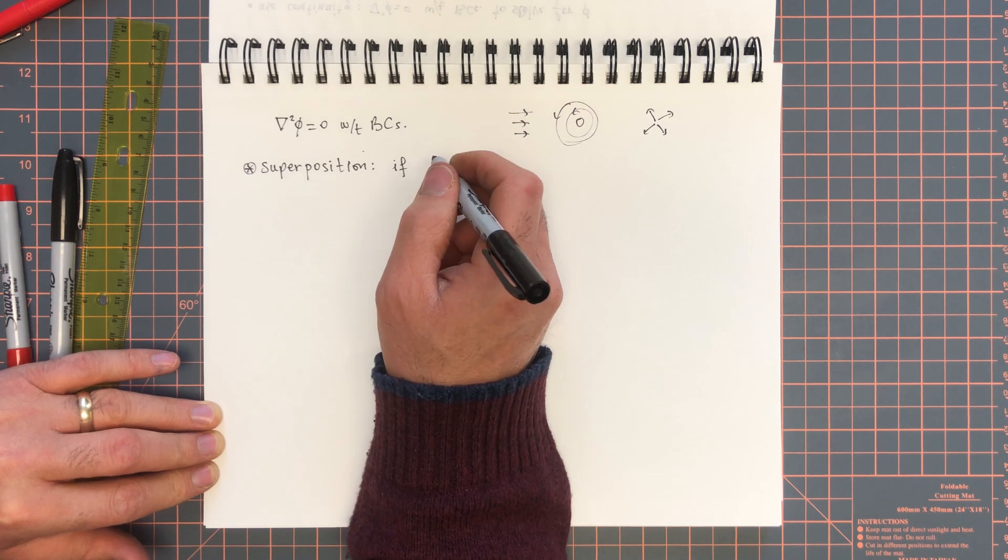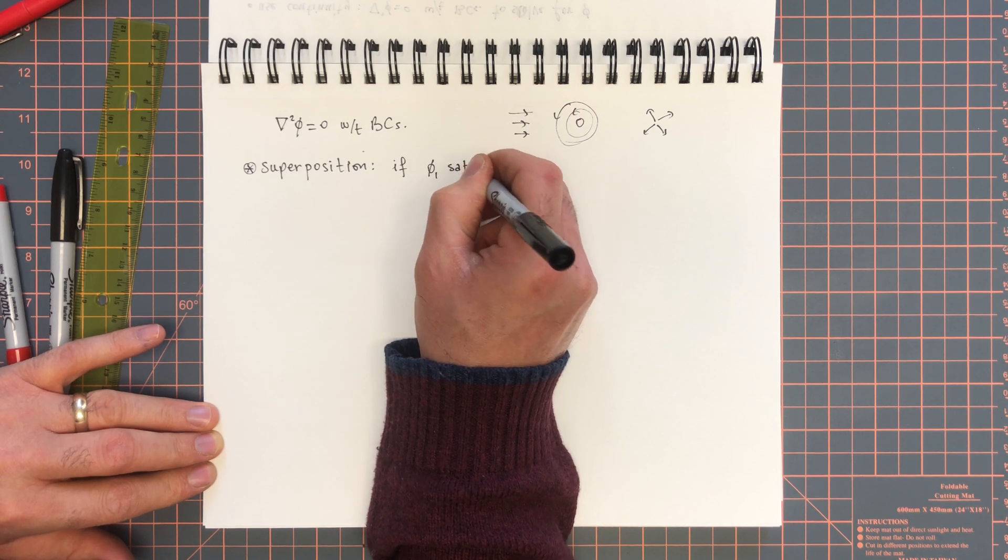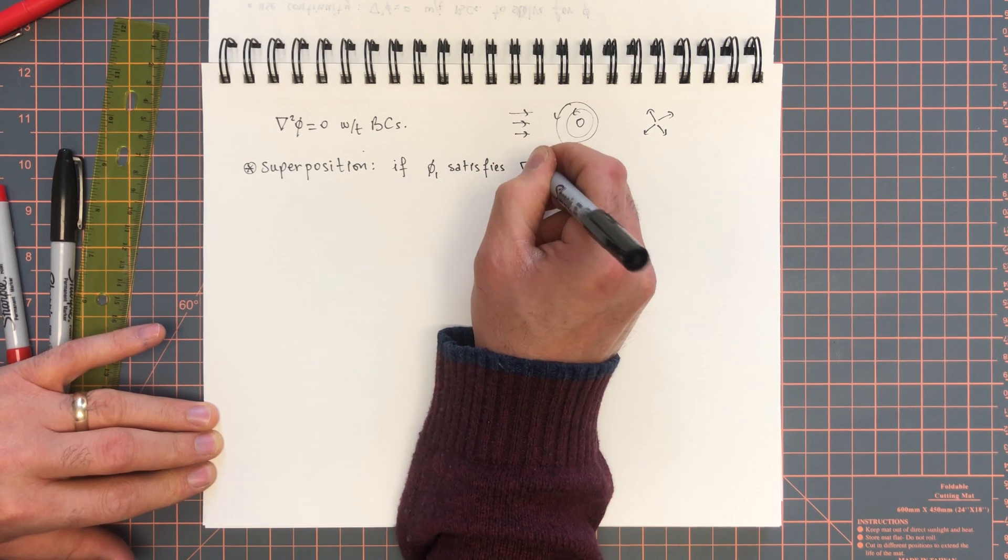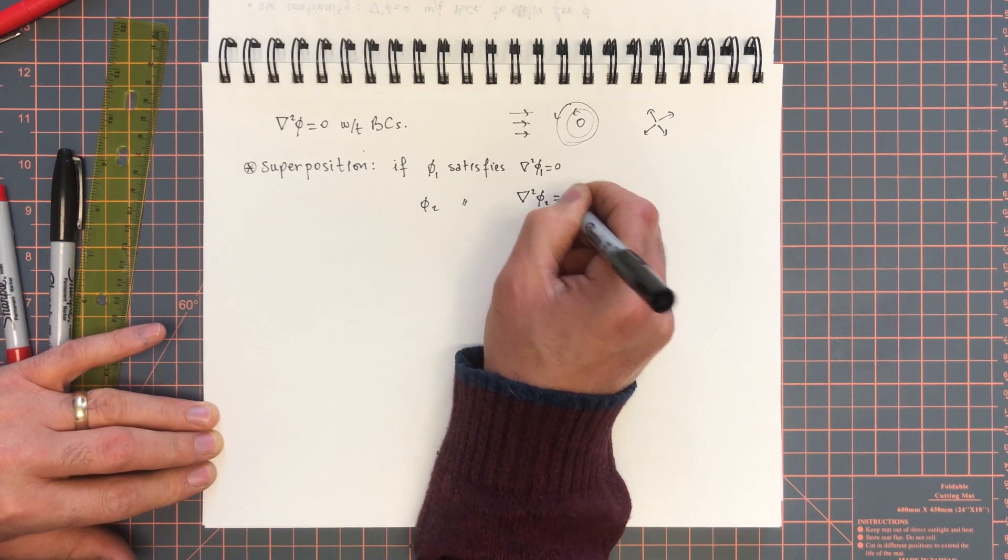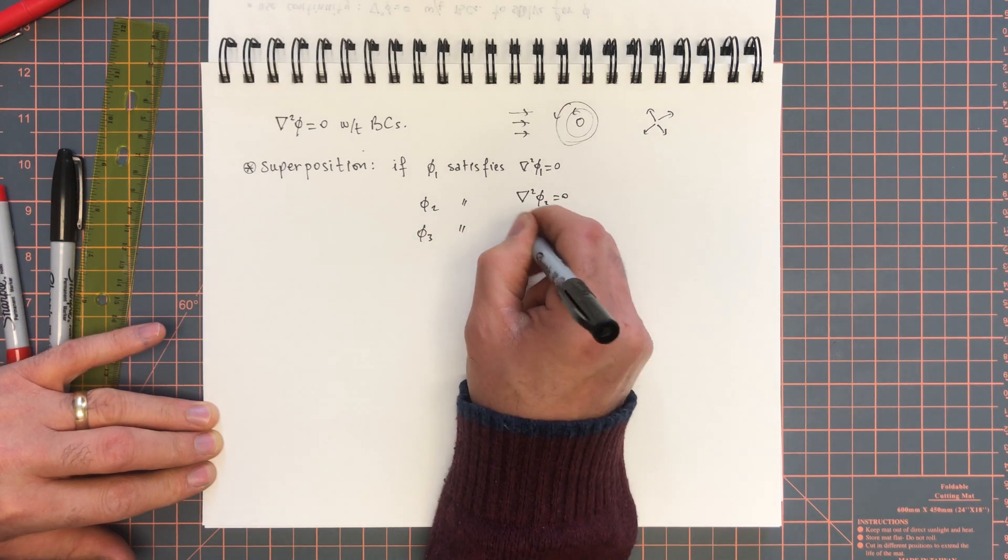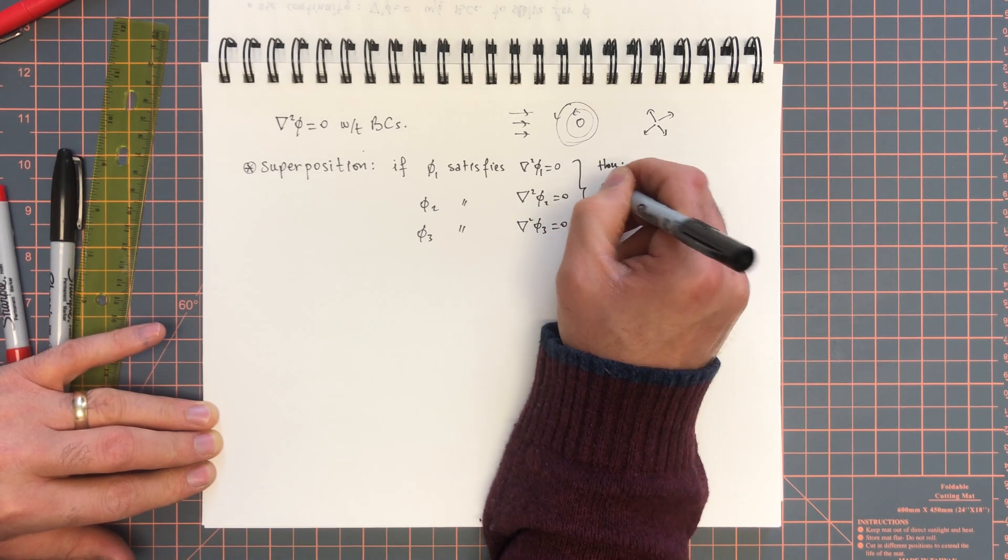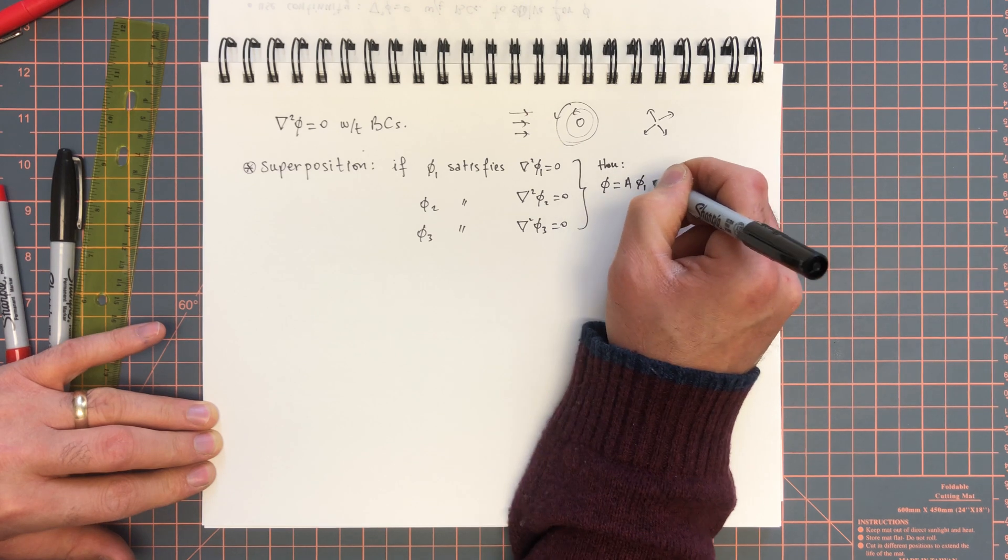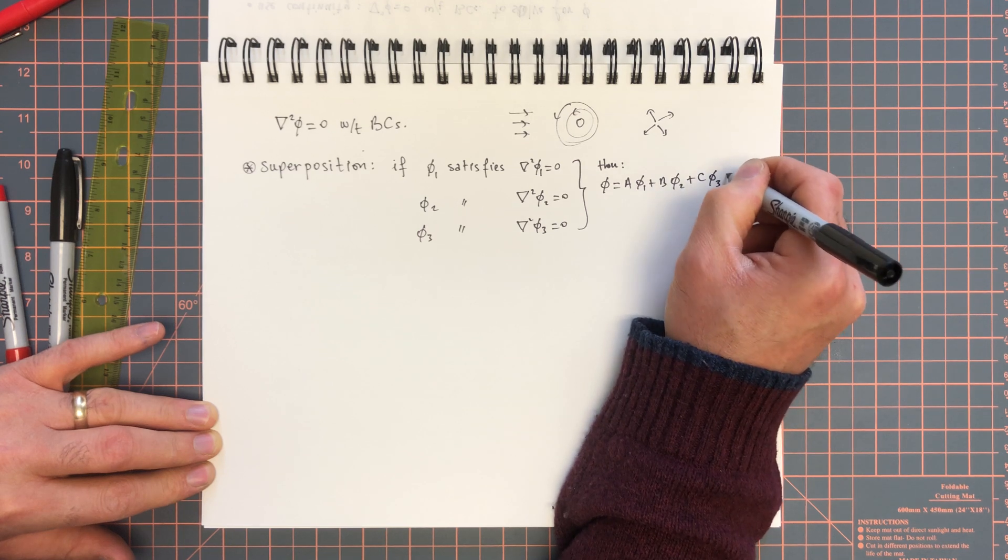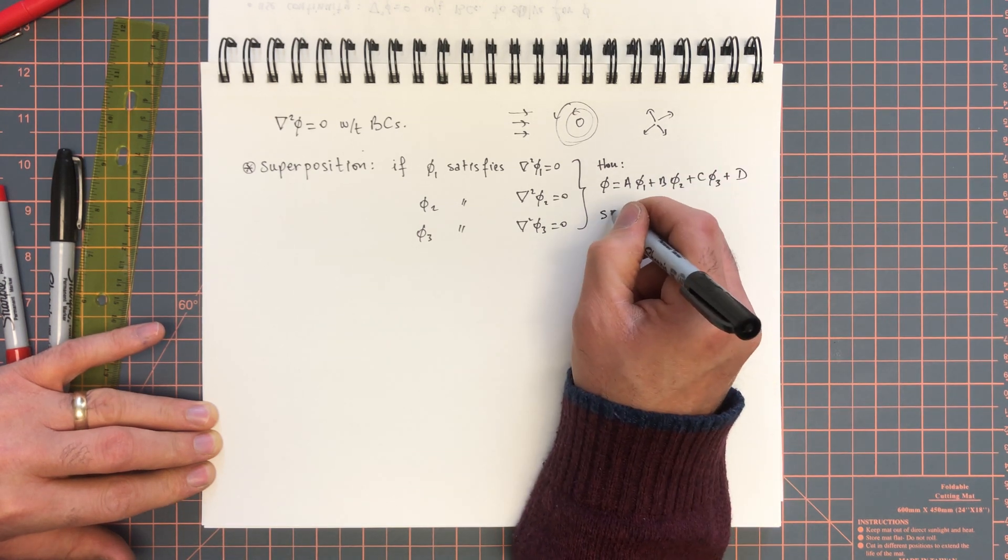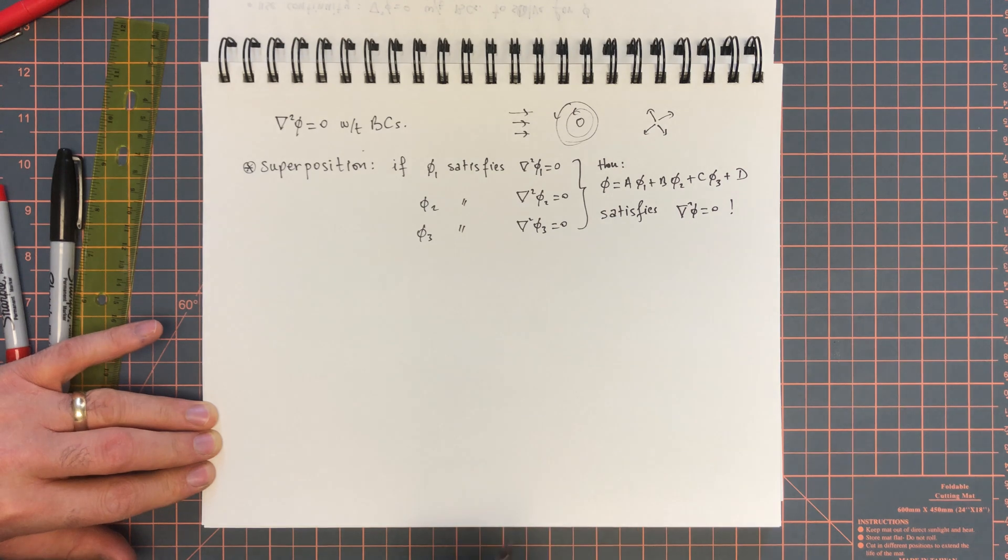And if for each one of those flows, we find the potential flow solution. So if phi1 satisfies del squared phi1 equals zero, phi2 satisfies del squared phi2 equals zero, and so on.